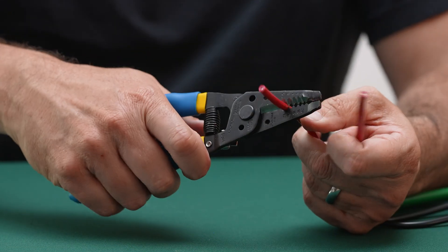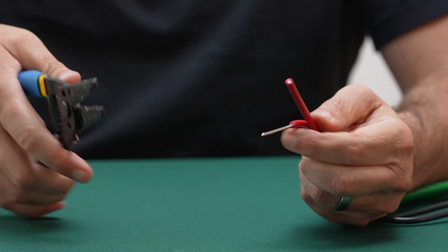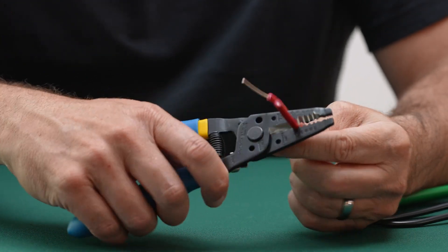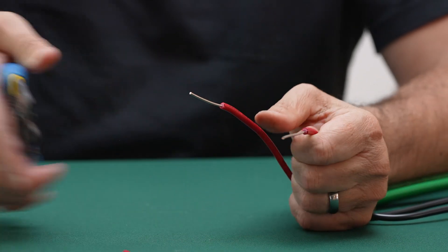For an inline splice, strip about an inch and a quarter of insulation from each conductor using the correct gauge slot on the stripper. Cut cleanly to avoid nicking the copper.